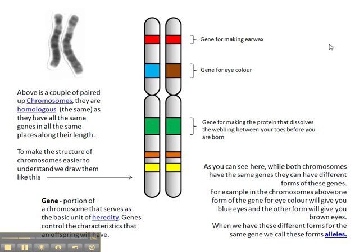As you can see here, while both chromosomes have the same genes, they have different forms of these genes. For example, in the chromosome above, one form of the gene for eye colour will give you blue eyes, whereas the other one will give you brown eyes. When you have different forms of the same gene, we call these forms alleles.